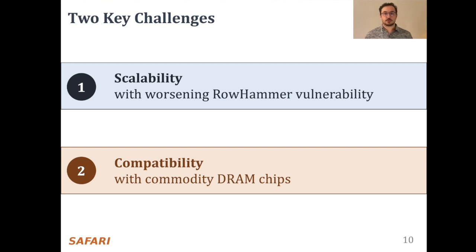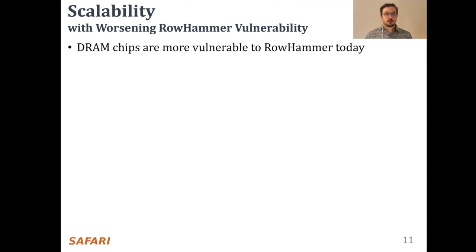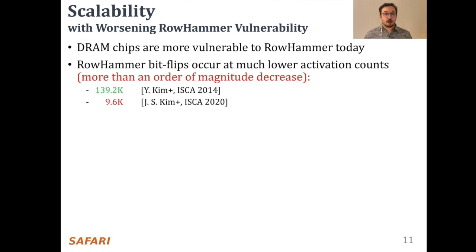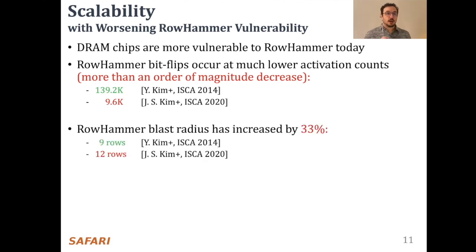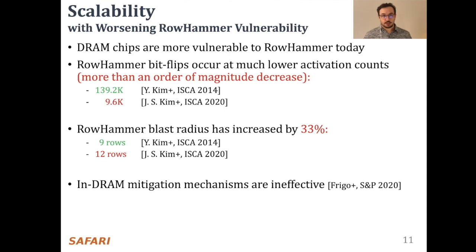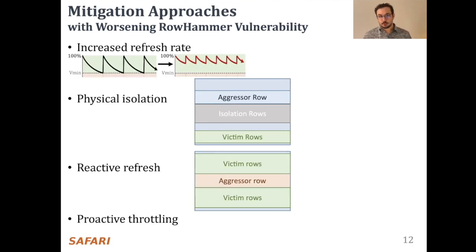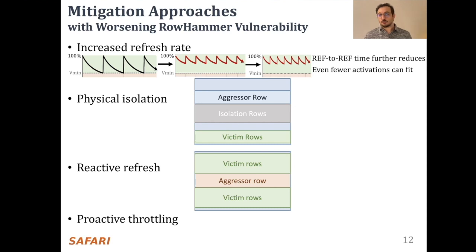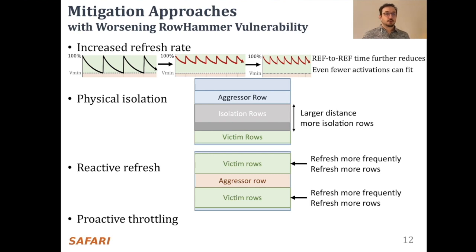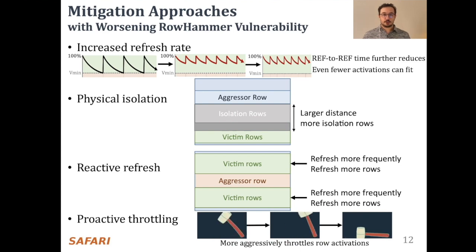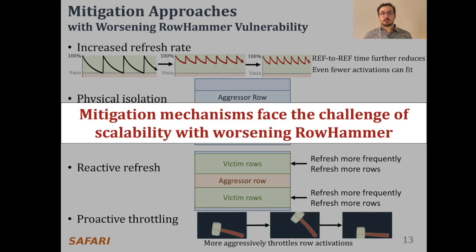Unfortunately, existing mechanisms face two key challenges. Let's begin with the scalability challenge. Recent works show that DRAM chips become more vulnerable to row hammer in the last decade. Row hammer bitflips can occur at much lower activation counts today, and hammering a row can disturb more rows than before. Furthermore, in-DRAM mitigation mechanisms are also shown to be ineffective. Therefore, row hammer is a more serious problem than ever today. As DRAM chips become more vulnerable, increased refresh rate requires refreshing all rows more frequently; physical isolation requires allocating more isolation rows; reactive refresh needs refreshing more potential victim rows more frequently; and proactive throttling slows down the system further. Therefore, scalability with worsening row hammer vulnerability is a significant challenge for all mitigation approaches.